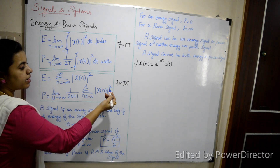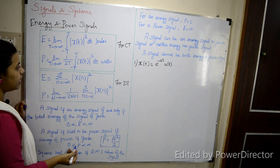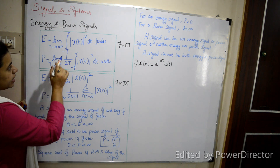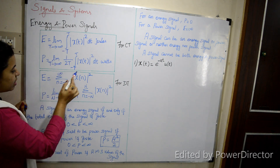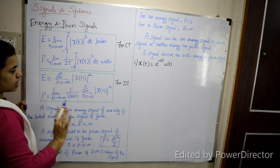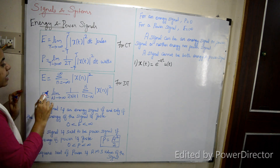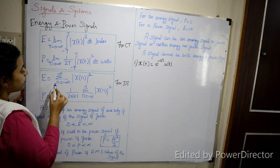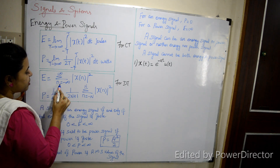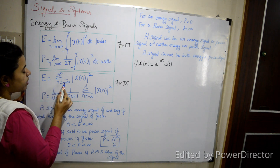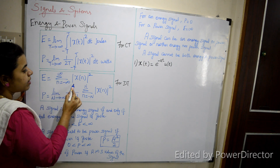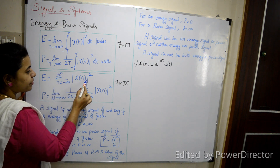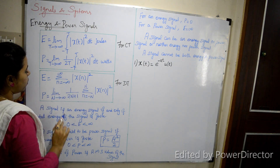For a discrete signal, instead of an integral we use summation. The energy is E = summation from n = minus infinity to infinity of |x(n)|².